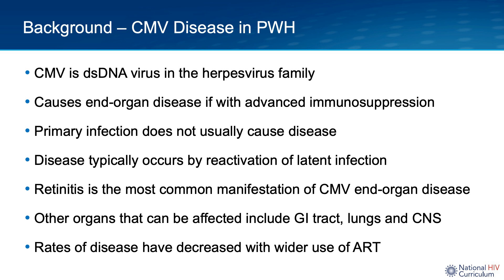In people with HIV, the most common organ that is affected is the eye. Retinitis is the most common clinical manifestation of CMV organ disease in people with HIV with a low CD4 count. But other organs can also be affected, including the GI tract — causing colitis or esophagitis — or the central nervous system, which could present as dementia, ventricular encephalitis, or polyradiculomyelopathies, and the lungs with CMV pneumonitis.